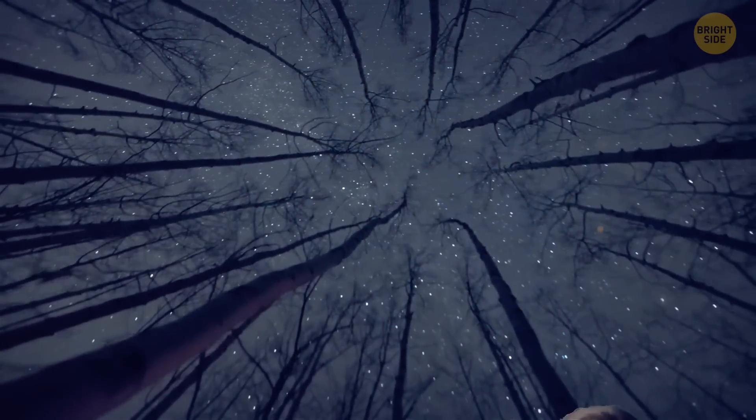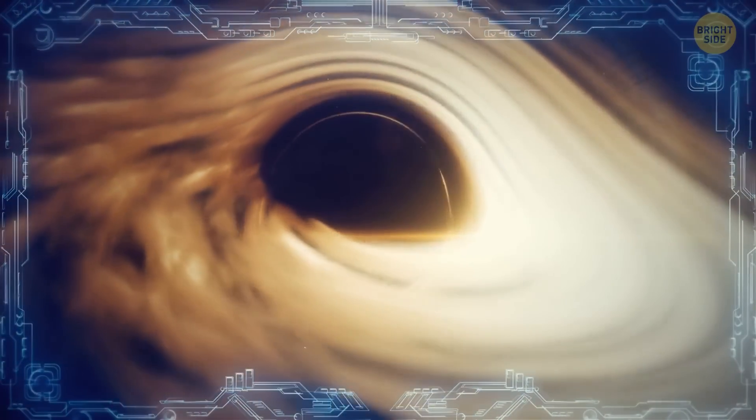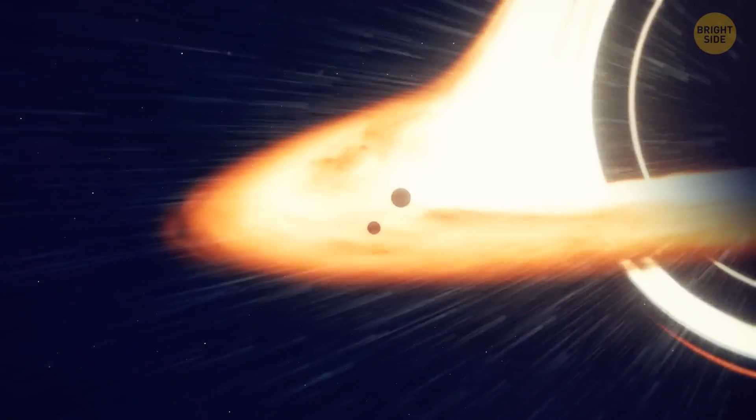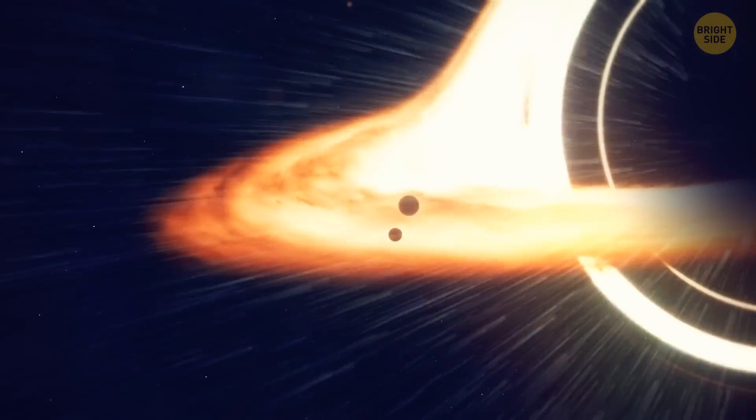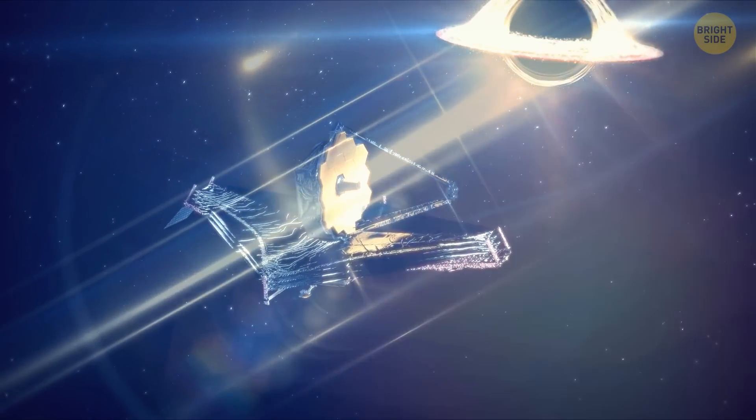For example, maybe the light we're seeing isn't coming from stars at all, but from the swirling disks of doom around supermassive black holes. These colossal cosmic beasts can gobble up matter and spit out a dazzling light show. And James Webb Telescope's keen eye is picking up on these enigmatic accretion disks like never before.